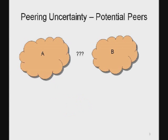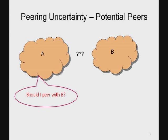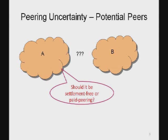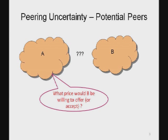Some of this uncertainty also extends to the case where two networks don't currently have any business relationship but are considering peering. Should I peer with the other network? What kind of peering should this be — settlement-free, where no one gets any money? Or should it be a paid peering relationship? If it's a paid peering link, what sort of price should I be willing to offer, and what sort of price would the other network be willing to accept?